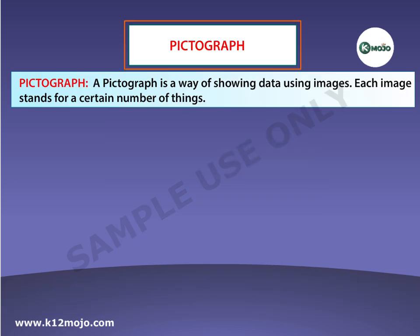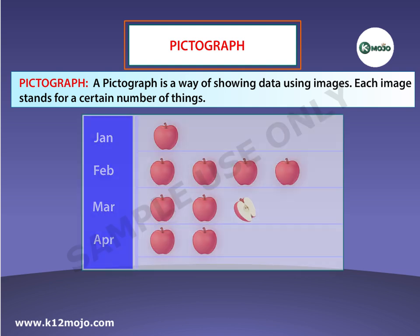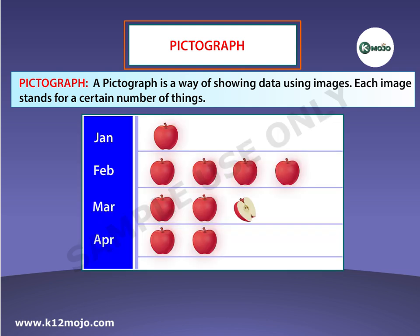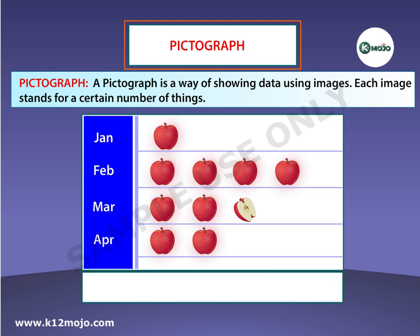A pictograph is a way of showing data using images. Each image stands for a certain number of things. Here is a pictograph of how many apples were sold at a shop over 6 months. Each picture of an apple means 10 apples, and the half apple means 5 apples.